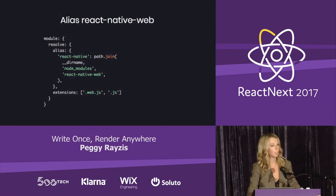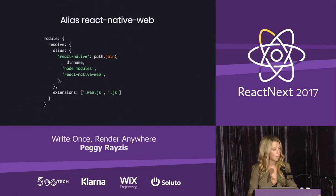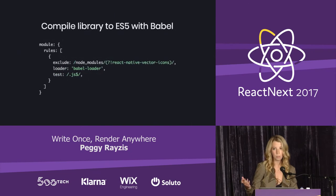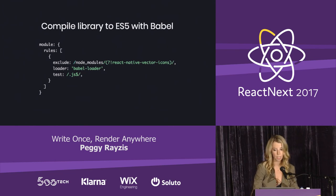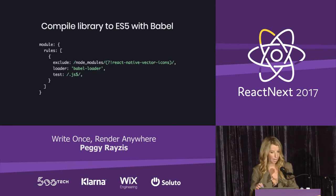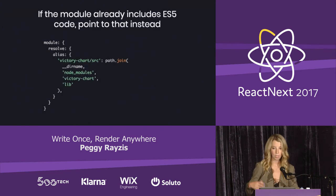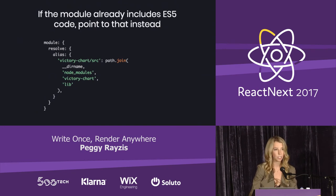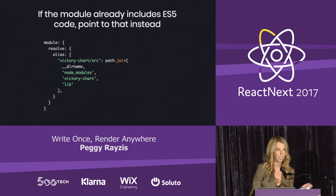By configuring a couple of things in your build process, you can actually use React Native libraries on the web. The first thing you're going to want to do in your project is alias React Native Web to React Native. Here I'm showing this with Webpack, but you can also achieve the same thing through the Babel plugin module resolver. Since React Native modules are in ES6, you're going to have to compile them with Babel in your Webpack build. To tell the Babel loader to process the React Native module, you add the module's name as a negative look-ahead to the exclusion regex. Sometimes your React Native module will contain code that has already been compiled — in the case of Victory Native, a charting library, if the React Native version points to uncompiled ES6 code, just point Webpack to the compiled code instead.